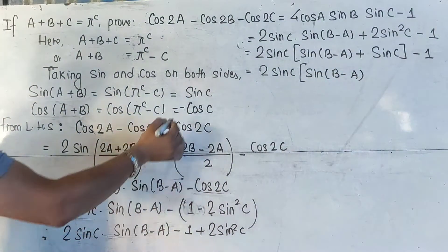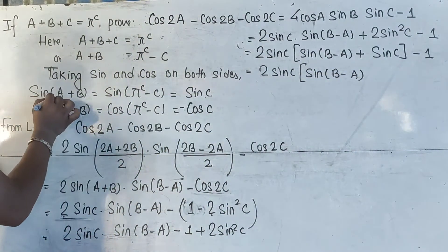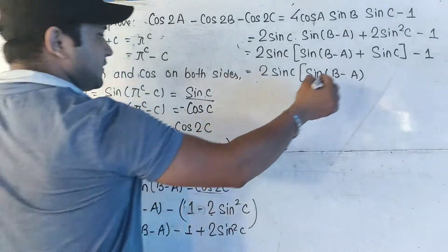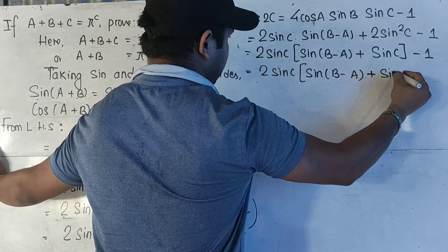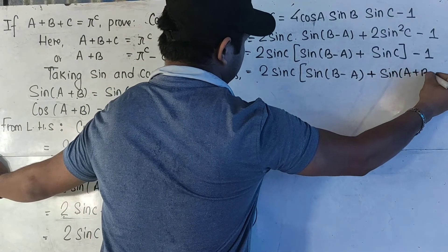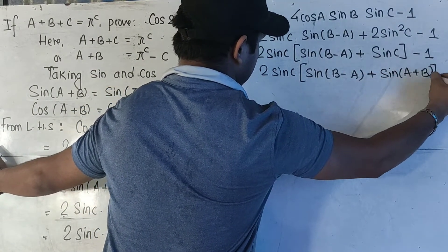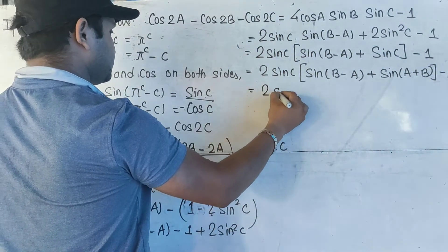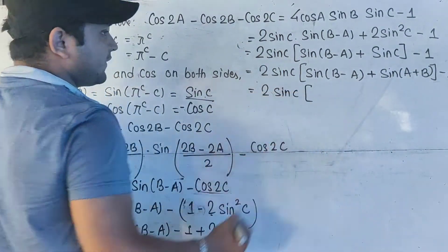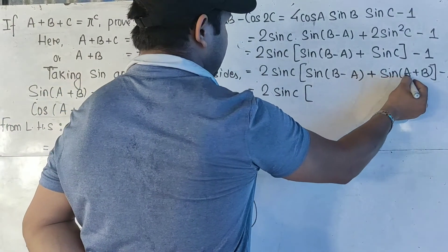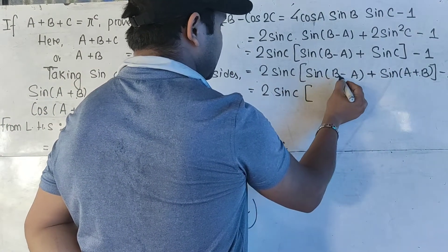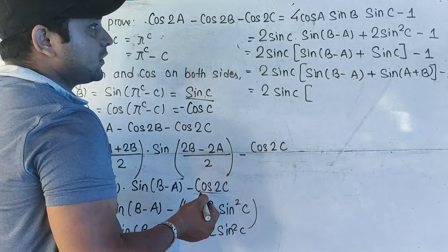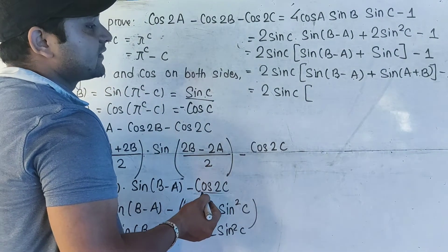Now let us use the formula for sinC. The formula for sinC is sin(a+b). So if we have sinC, we can write sin(a+b). So we write 2·sinC times [sin(b minus a) plus sin(a+b)], then plus sinC minus 1.